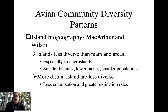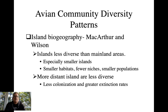Two famous biologists who documented important patterns in avian diversity were MacArthur and Wilson. They established what's called island biogeography theory. They talk about it from the perspective of an island — differences from a mainland or different sizes of islands — but you can think about this as any habitat patch separated from larger patches to greater or lesser degrees of isolation. Their basic idea was that islands tend to be less diverse than mainland areas, largely because of size: smaller islands have fewer species, less habitat diversity, fewer niches, and smaller populations.